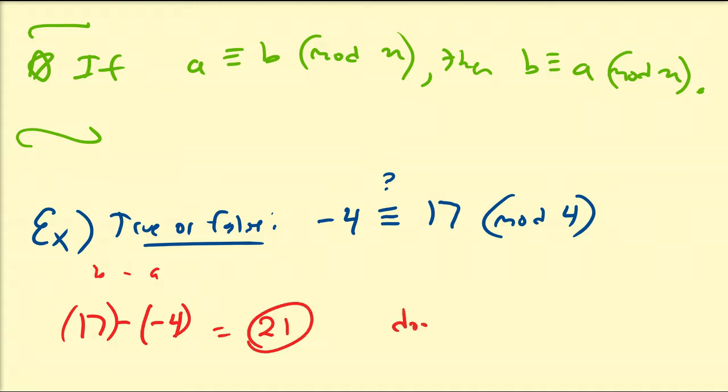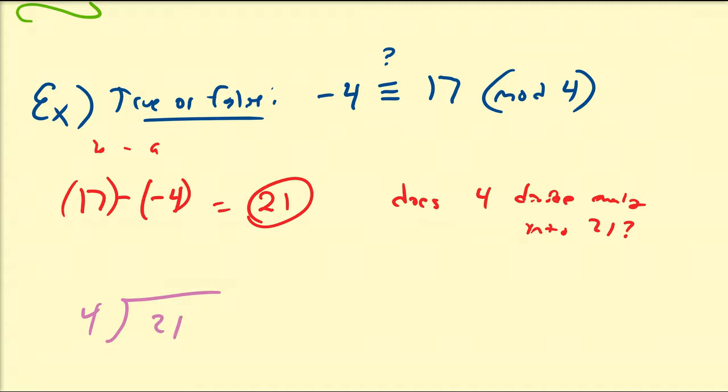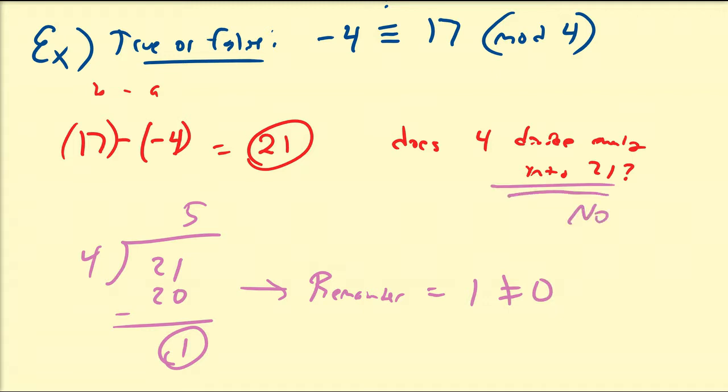So does 4 divide evenly into 21? Well, that's an easy verification. So 4 goes into 21, 5 times, and 5 times 4 is going to be 20. And that difference is equal to 1, and 4 does not go into 1. So from this division, the remainder is equal to 1, which is not equal to 0. Therefore, the answer to that question is no. So negative 4 is not congruent to 17 modulo 4.